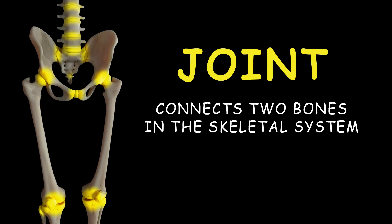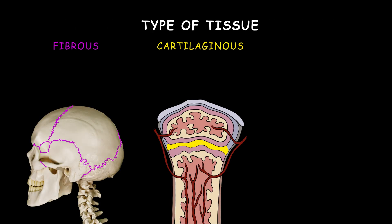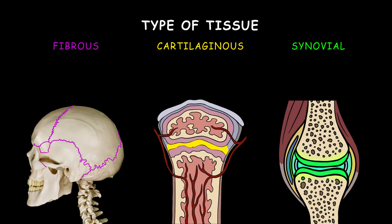A joint connects two bones in the skeletal system. Joints can be classified in two ways: the type of tissue present, or the degree of freedom permitted. There are three tissue types: fibrous, cartilaginous, and synovial.